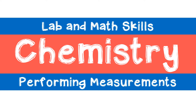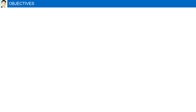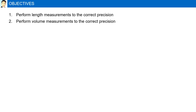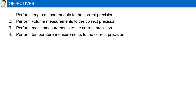Performing measurements. Objectives: perform length measurements to the correct precision, perform volume measurements to the correct precision, perform mass measurements to the correct precision, and perform temperature measurements to the correct precision.